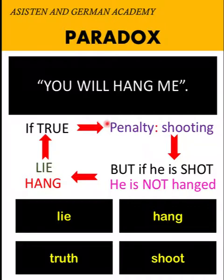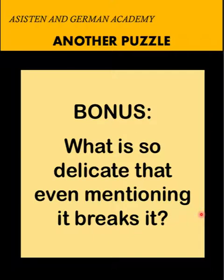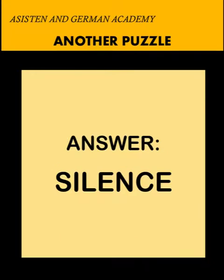This creates an endless cycle of contradiction, and in the process the prisoner can escape the penalty of either being hanged or being shot. This statement can save the prisoner. If you have other ideas to solve this problem, write them in our comments and let's discuss why your answer is correct. Thank you very much, and we hope to see you again in our next video. Bye for now.